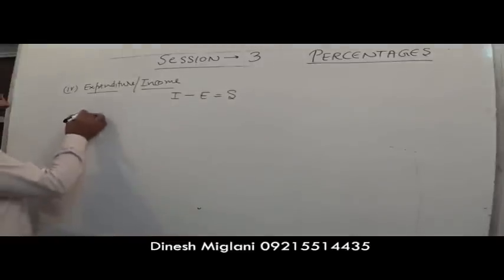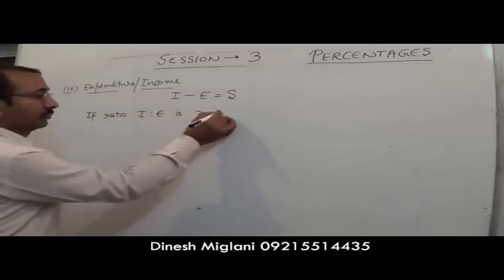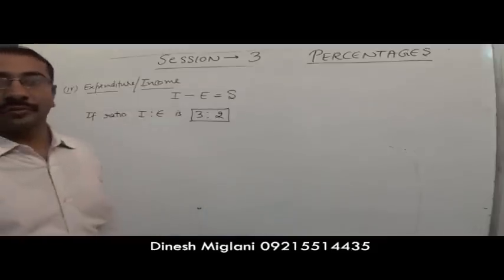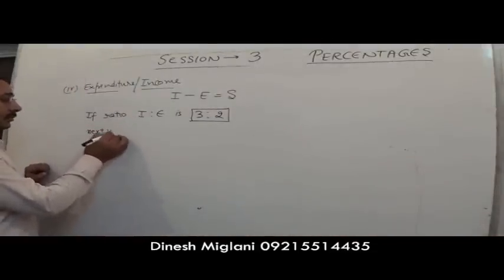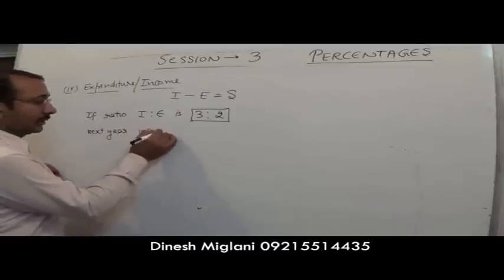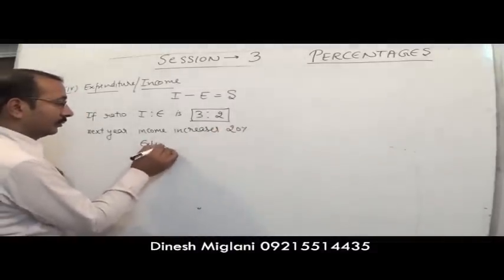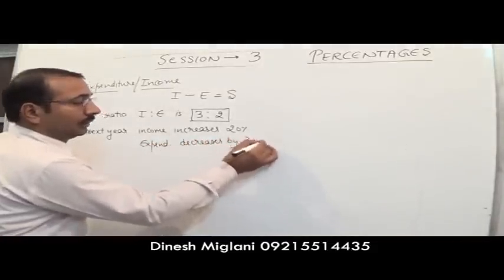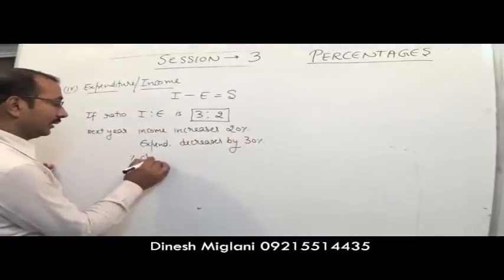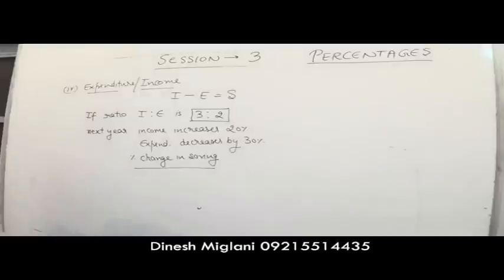For example, if the ratio of income to expenditure is 3:2, and in the next year income increases by 20% and expenditure decreases by 30%, we have to find the percentage change in savings.